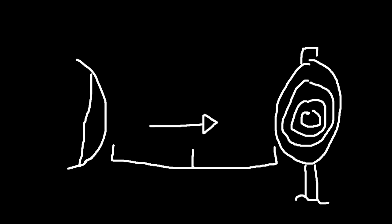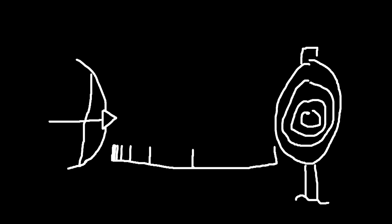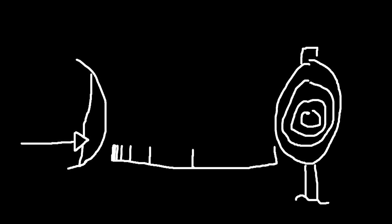An archer fires an arrow at a target. But how exactly is the arrow able to reach the target? To get there it must first make it halfway. Before that it must make it one quarter of the way, and one eighth before that. You can keep dividing forever, meaning there are infinitely many points the arrow must pass. How is motion possible at all? This is one of Zeno's paradoxes — and it's not a contradiction, not an impossible question. It's simply a counterintuitive fact: yes, you can divide any finite distance into infinitely many segments, and it remains finite.